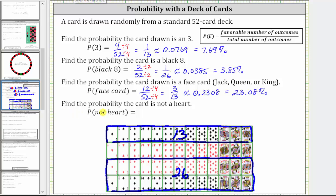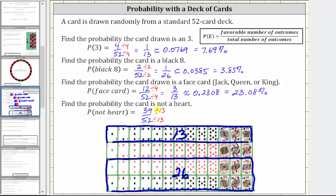Therefore, the probability of not a heart is 39 divided by 52, or 39/52. The greatest common factor between 39 and 52 is 13, so we divide both by 13. 39 divided by 13 is 3, and 52 divided by 13 is 4.